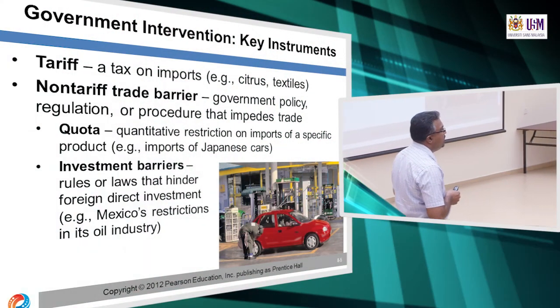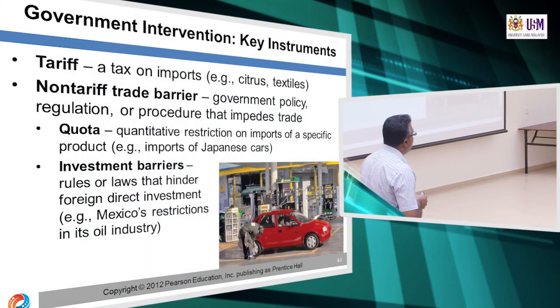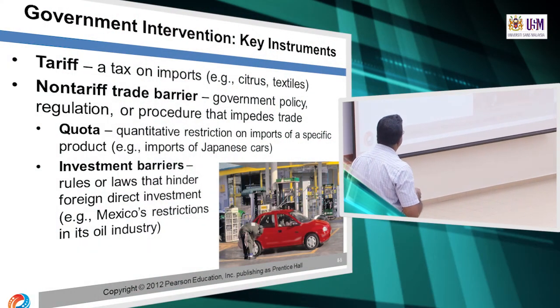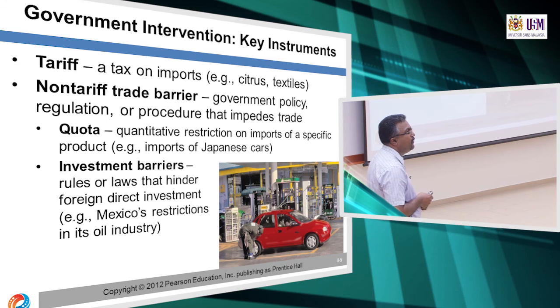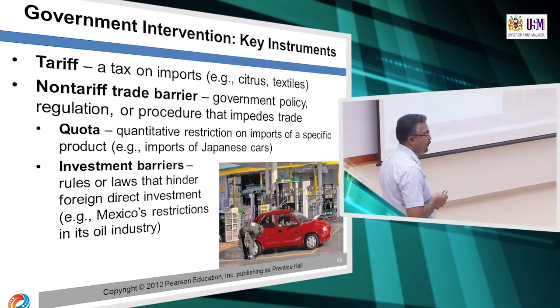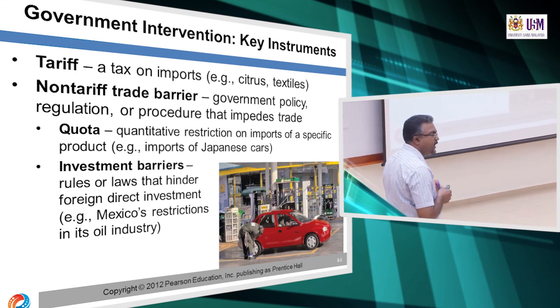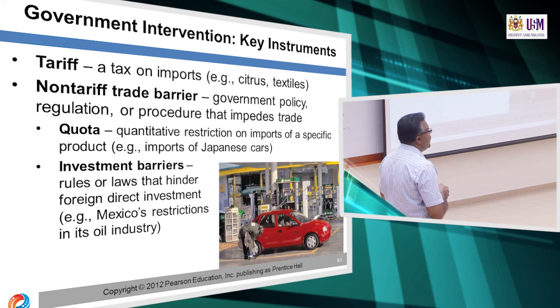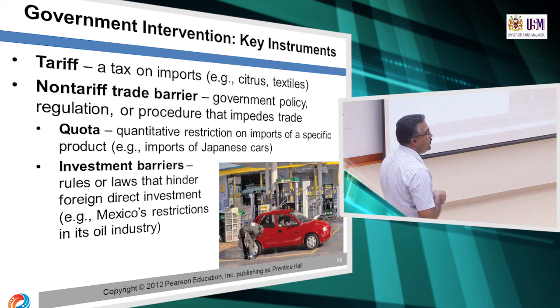These are some of the key instruments we will look at today. Number one is tariff — basically a tax on imports. If you buy a car for 100,000, an import tariff will cause the car to become 110,000, where the 10,000 is the tax.